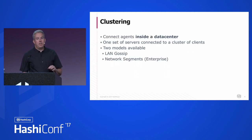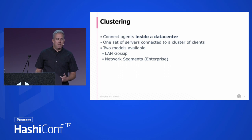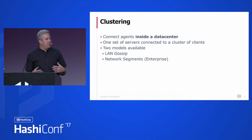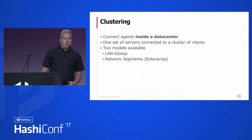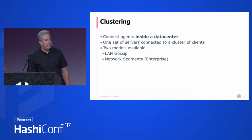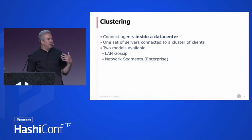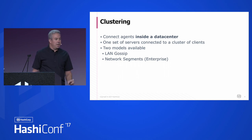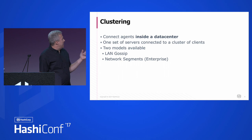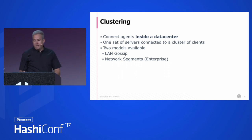There are basically two different things you're trying to do with these network models. One is clustering — when you have a set of machines that are logically related, maybe physically located in the same place or used for the same type of application, console lets you connect those together in a cluster, which we call a console data center. Each data center has one set of console servers and any number of agents. For clustering, there are two models: LAN gossip and network segments, which is available in Enterprise.